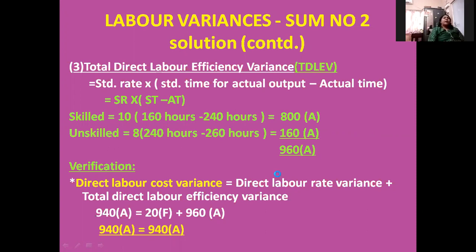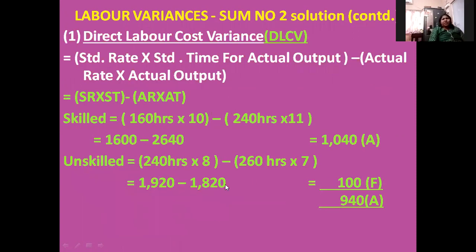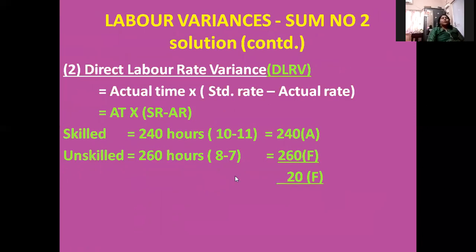The key strategy to recall the formulas: for material or labor variances, look at the title of the calculation. For rate variance, compare the standard rate with the actual rate within brackets. For efficiency variance, compare the standard time with the actual time — specifically standard time for actual output. This makes it easy to work out the calculations.